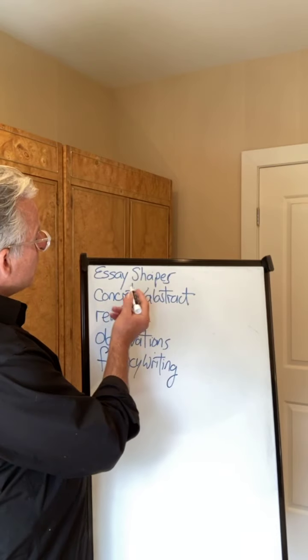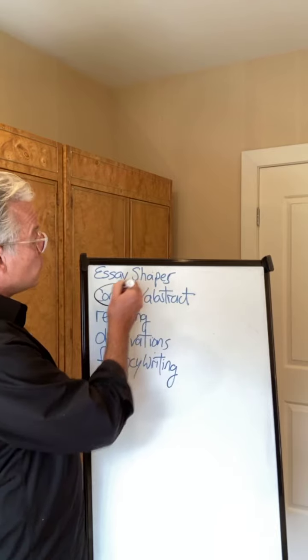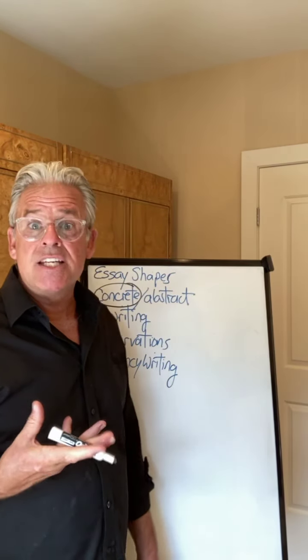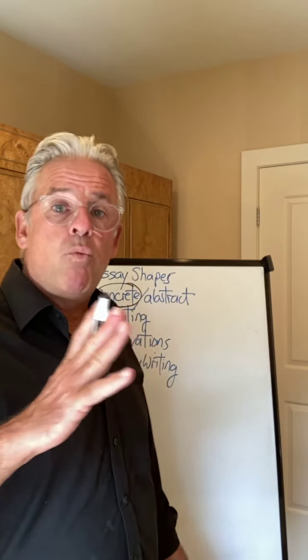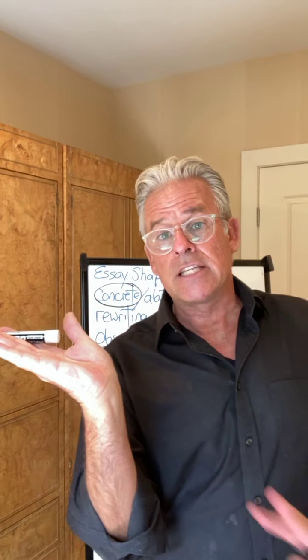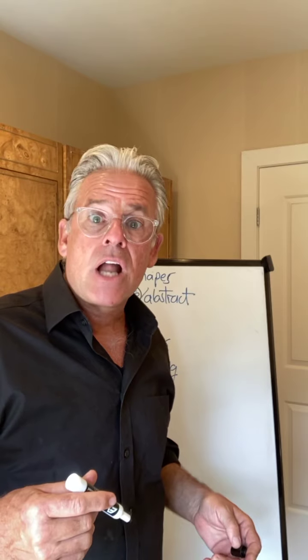Today we're going to talk more specifically about moving from concrete writing — writing that's specific and detailed, in a dialogue or a description — and moving from that as one pole of the college-level writing spectrum to the other pole: writing ideas. When we talk about abstract writing, we're talking about writing about our ideas, the meaning of things, and the lessons of things. To do that, we're going to extend family stories into a real college essay.